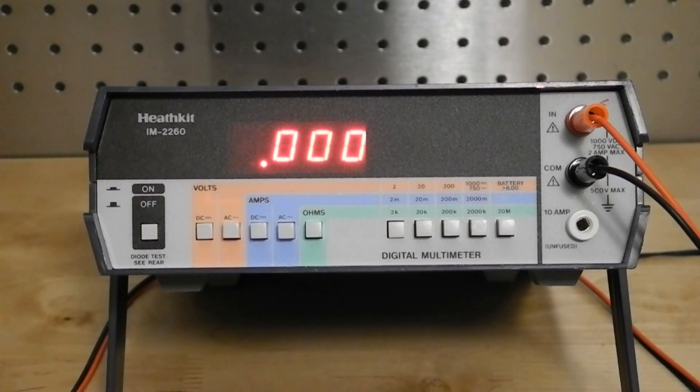Functions are DC volts, AC volts, DC amps, AC amps, and ohms. There are four voltage ranges and five current and five resistance ranges.